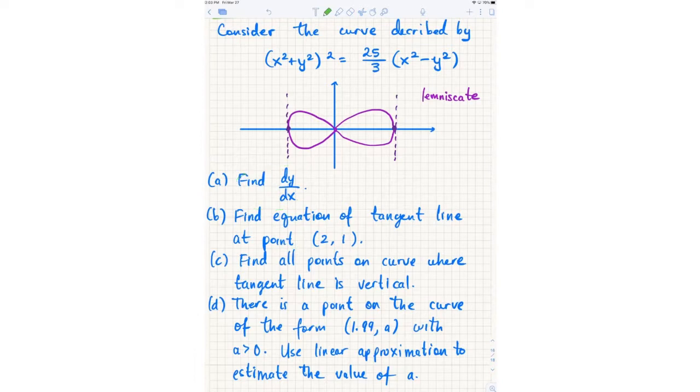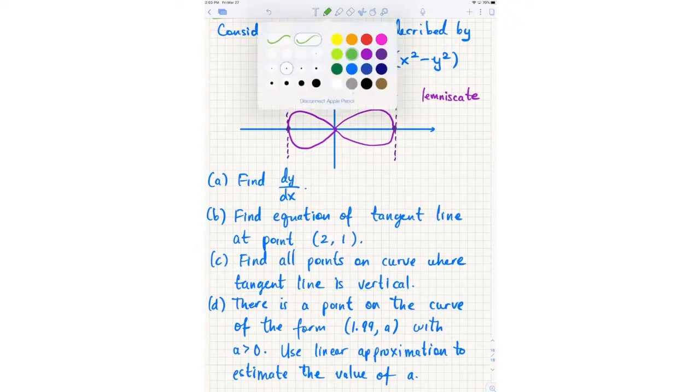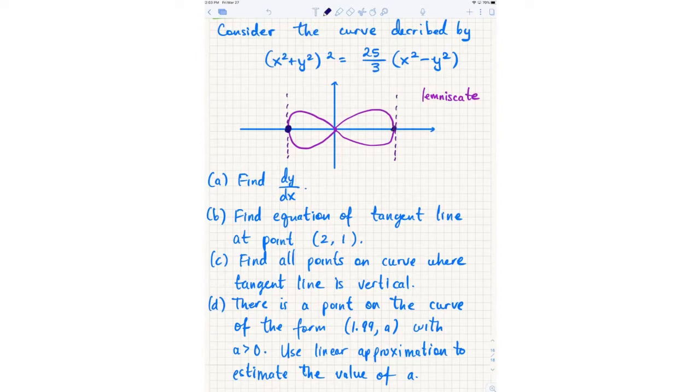Now, part C and D are kind of independent of each other, although you still do need the derivative. Part C asks us to find points on the curve where the tangent line is vertical. We can already see from the diagram that we should end up getting two such points. This leftmost point and this rightmost point have vertical tangents, and there are no other points on the curve that have vertical tangent lines.